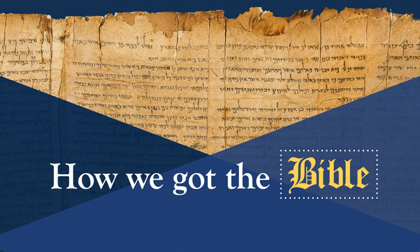BDAG definition two for harpagmon is "something to which one can claim or assert title by gripping or grasping — something claimed." Under definition 2a, it can be taken sensu malo — that's Latin for "bad sense" — to mean booty, a grab. Only the context and an understanding of Paul's thought in general can decide whether it means holding fast to something already obtained, or the appropriation to oneself of something that is sought after. Definition 2b: a good sense is also possible — "a piece of good fortune, windfall, prize, gain." It remains an open question whether the windfall has already been seized or whether it has not yet been appropriated.